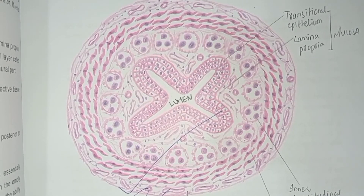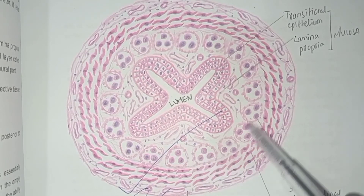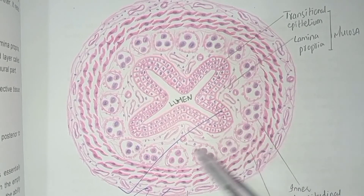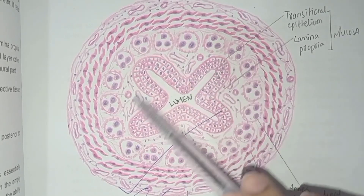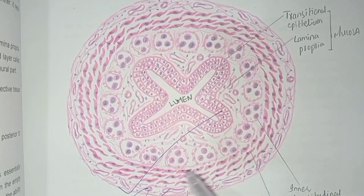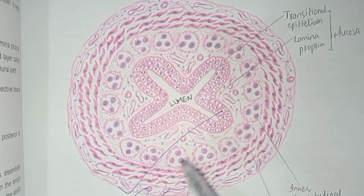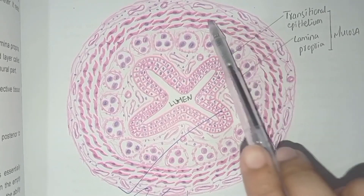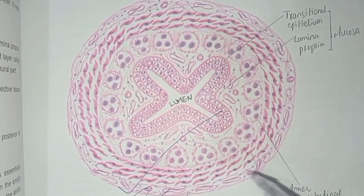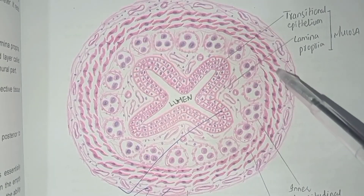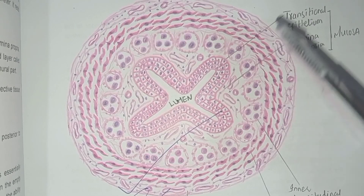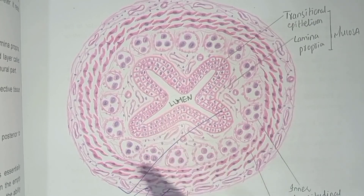In the lower third of the ureter, there are three layers: inner longitudinal, middle circular, and outer longitudinal again. This diagram represents the upper two thirds of the ureter with two muscularis layers. The most external layer is the adventitia, which contains fibrous tissue, blood vessels, nerves, and lymphatics.